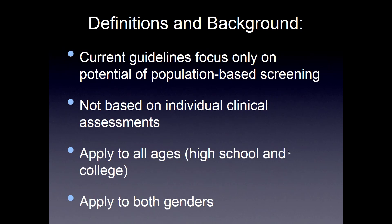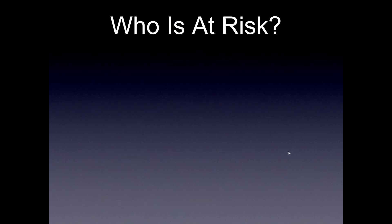The current guidelines focus only on the potential of population-based screening. It's not really based on an individual clinical assessment for one child, but more on what we need for the population as a whole. We apply those guidelines to all ages in high school and college and apply to both genders.